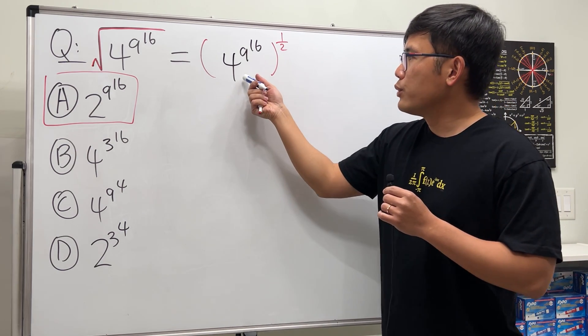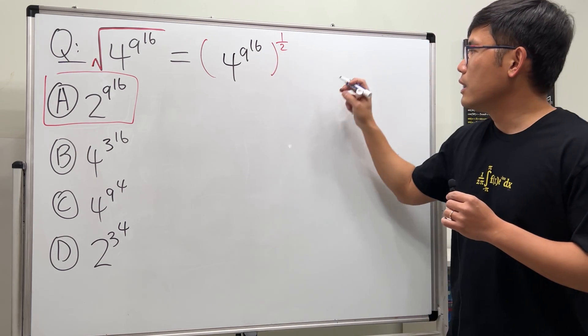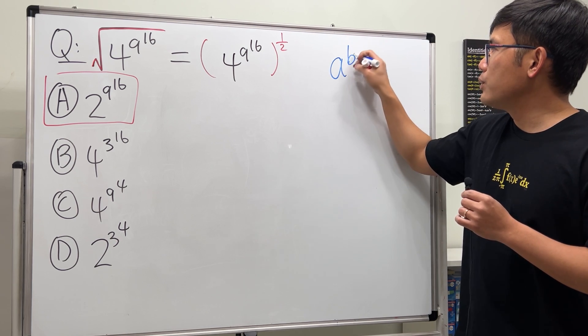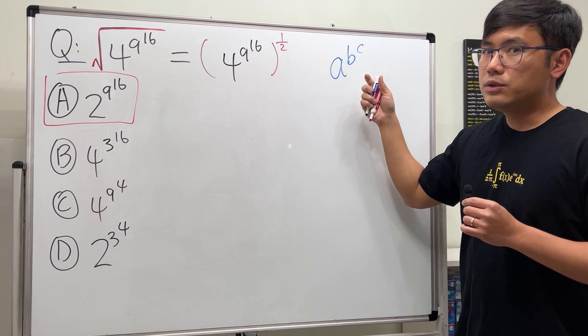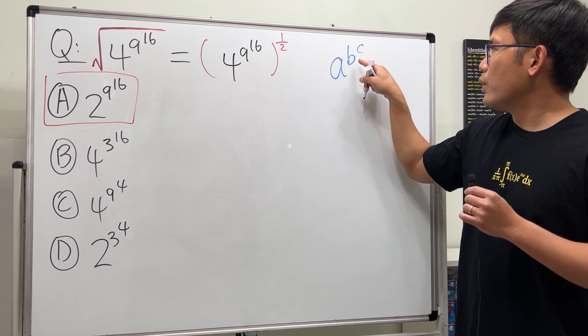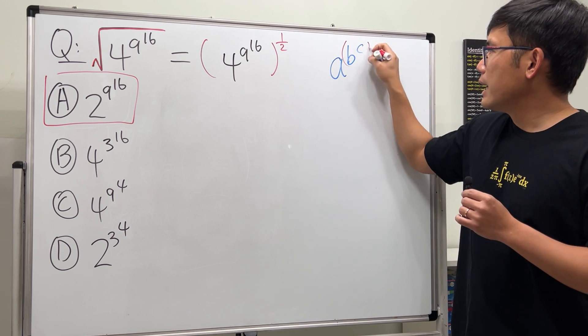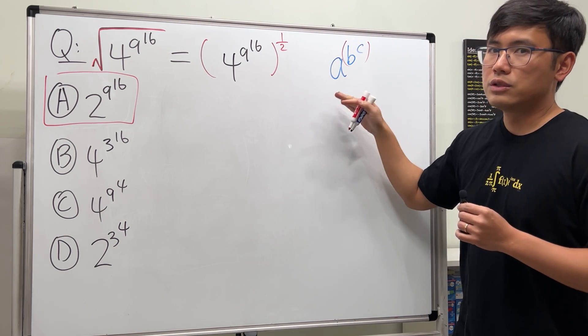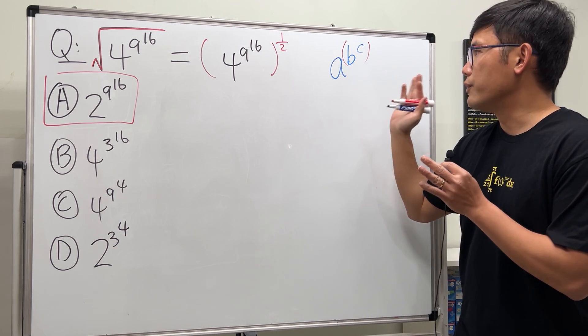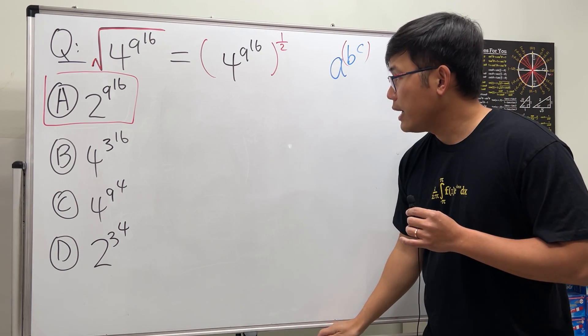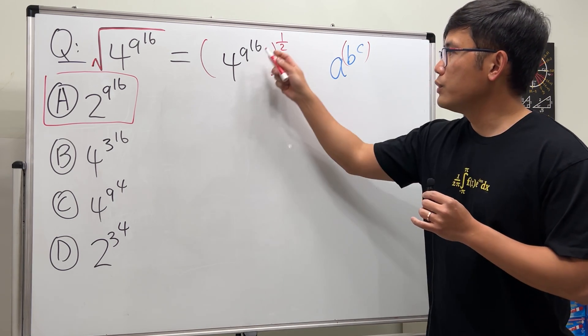Whenever we are doing this kind of exponentiation, when we have a to the b to the c, we are going to work out b to the c's power first and then do a to that power. So this is just a convention of this notation. With that said, when we have 4 to the 9 to the 16, we are going to look at this as a result. It's just a very big number.